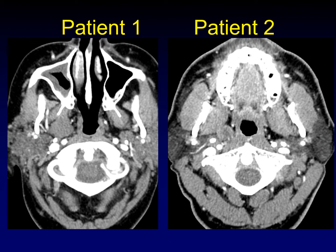The other important thing to notice is that here, the parapharyngeal fat has been replaced but still goes all the way around the mass. Whereas on this side, the parapharyngeal fat has been displaced — it goes more forward than it does on the contralateral side.